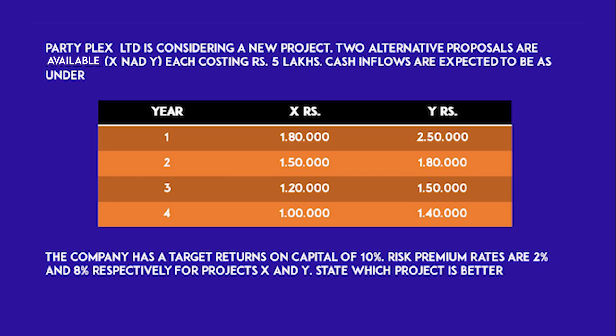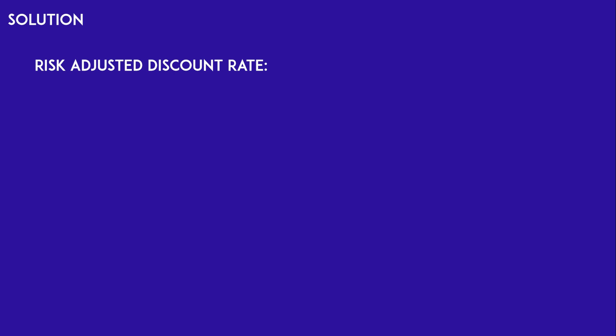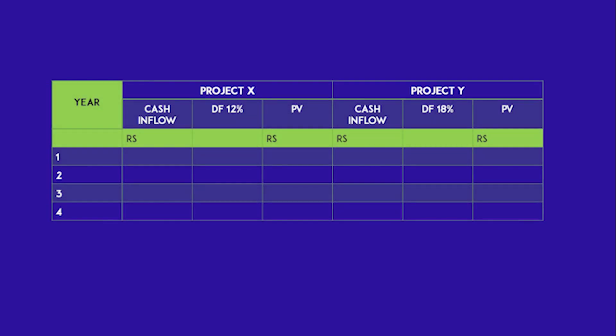To find the solution, we calculate the NPV of both projects. First, compute RADR: for Project X, the normal rate is 10% plus a risk premium of 2%, giving RADR of 12%. For Project Y, it is 10% plus 8%, giving RADR of 18%. Now we calculate the NPV of Project X using a discount factor at 12%, with columns for year, cash inflows, discount factor, and present value.